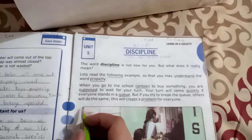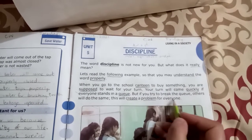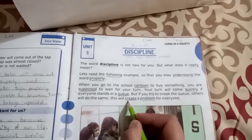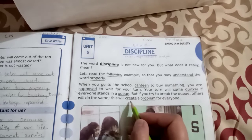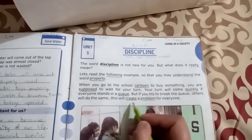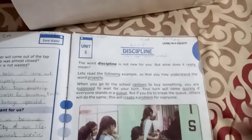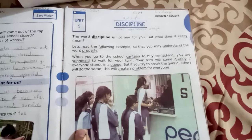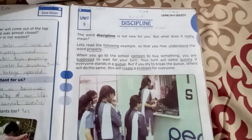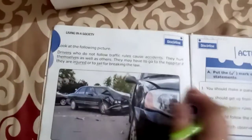But if you try to break the queue, others will do the same. This will create a problem for everyone. Underline the words 'create' and 'problem' and read them three times: create, create, create; problem, problem, problem. This is the picture of the canteen — the girls are not making a queue, they are not following the rules, they are not showing discipline.